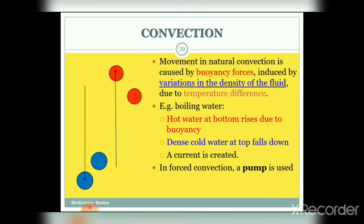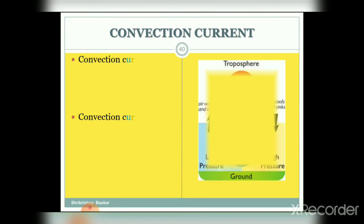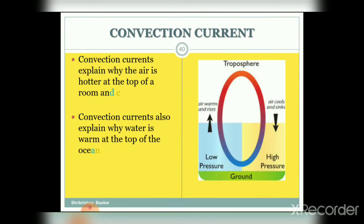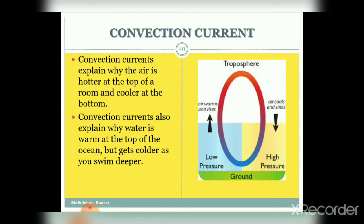In natural convection, movement is caused by buoyancy forces induced by variations in the density of the fluid due to temperature differences — for example, boiling water. Hot water at the bottom rises due to the buoyancy effect, and dense cold water at the top falls down, creating a current. Convection currents explain why air is hotter at the top of a room and cooler at the bottom, and why water is warmer at the top of the ocean but gets colder as you swim deeper.